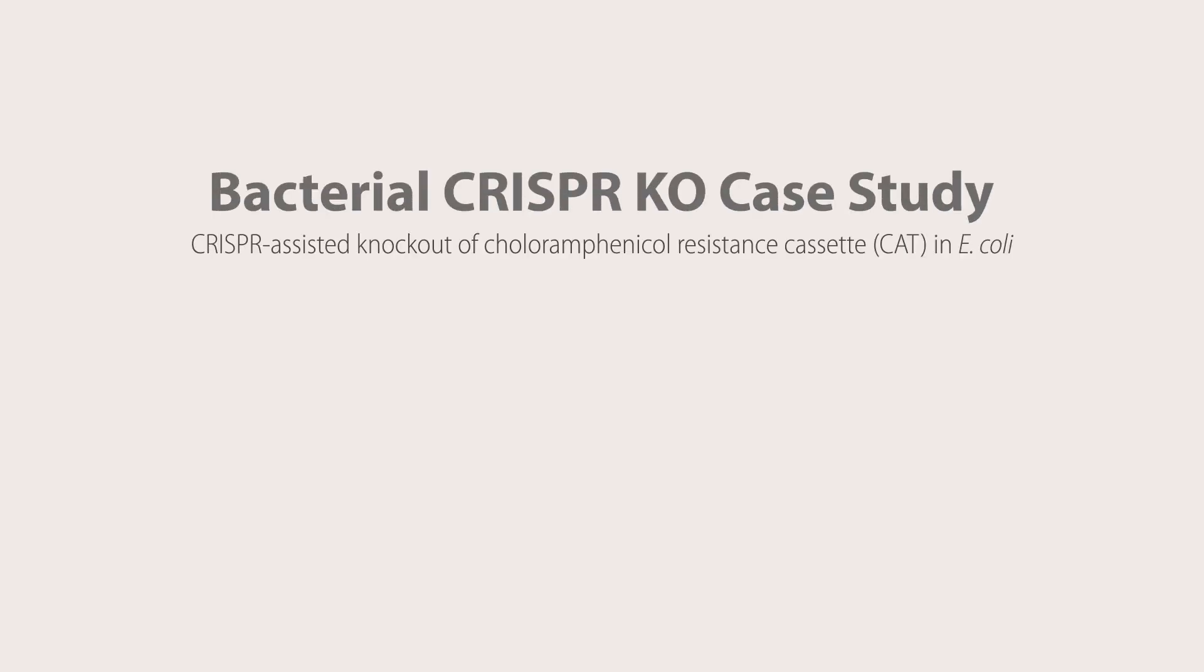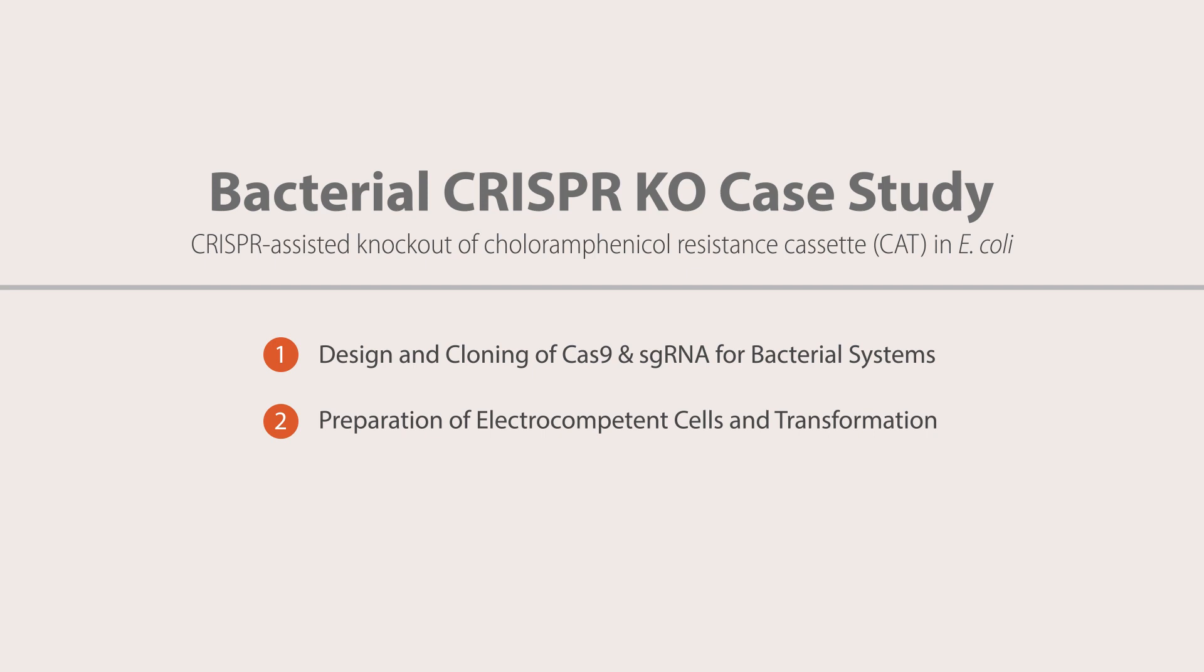This case study will cover three phases. Phase 1: The design and cloning of Cas9 and sgRNA for bacterial systems. Phase 2: Preparation of electrocompetent cells and transformation. Phase 3: Screening and confirmation of gene knockout.